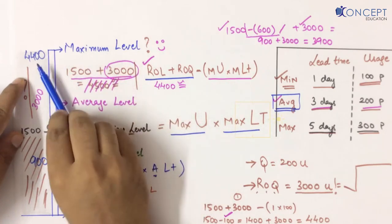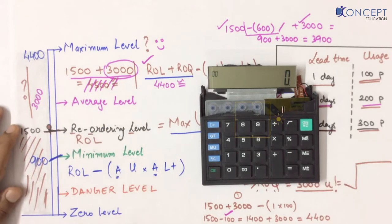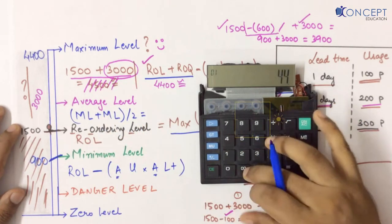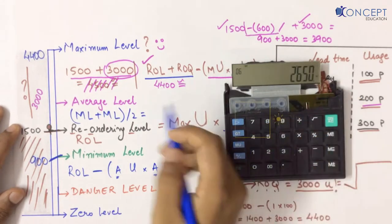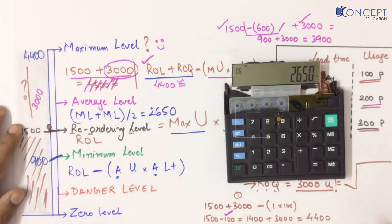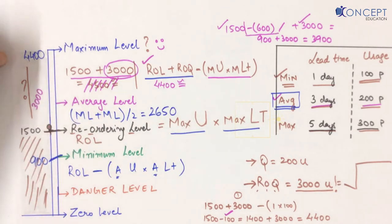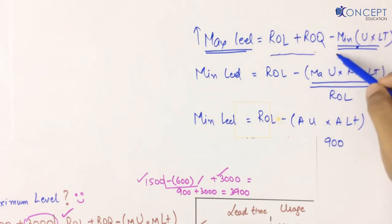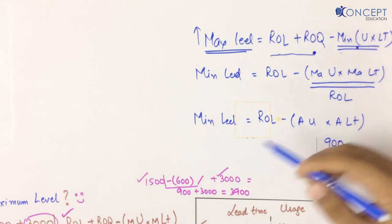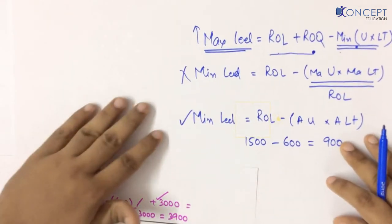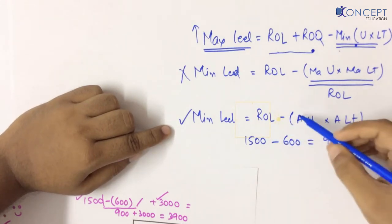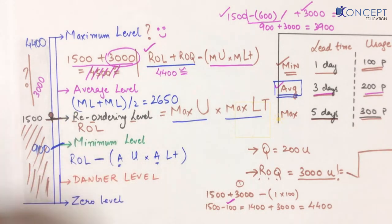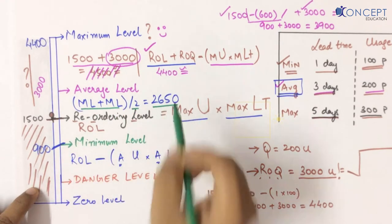Now, if I have maximum level = 4400 and minimum level = 900, can I calculate an average level? Yes: average level = (maximum level + minimum level) ÷ 2 = (4400 + 900) ÷ 2 = 2650. So my average inventory will be 2650 units. Average level is very simple — add max and min levels and divide by 2.